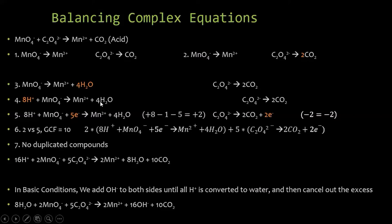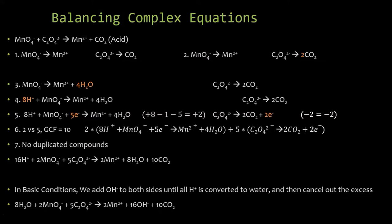Step four: balance hydrogens by adding H⁺. There are eight hydrogens on the right from the four waters, so add eight H⁺ to the left. For the oxalate half: no hydrogens present, so none needed. Step five: balance charges with electrons. On the permanganate side: eight plus minus one equals seven plus on the left, versus two plus on the right. The difference is five, so add five electrons to the left. Manganese goes from seven plus to two plus — a five-electron change, confirming this is reduction.